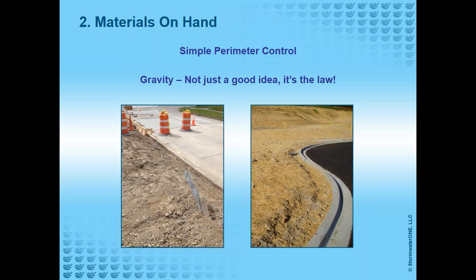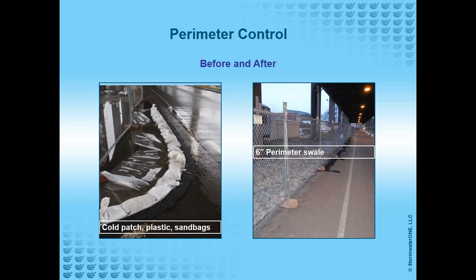This is a downtown Seattle project — a zero discharge site where, due to contaminated soils, no water was allowed to leave. They struggled with this. On the left they had a cold patch berm covered with plastic and sandbags and were still getting leakage. On the right they found a solution by simply excavating down six inches and filling it with rock — no drop of water ever left the site after that. A clue appeared in the SWIP: soils were described as moderately permeable under a compacted upper layer. Once they scratched that surface, they could infiltrate a lot of water without going to complicated solutions.